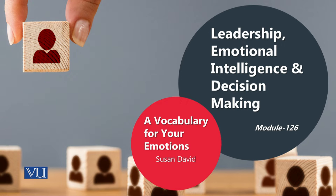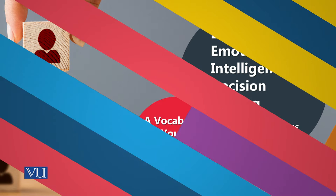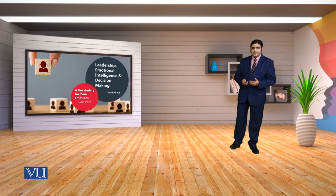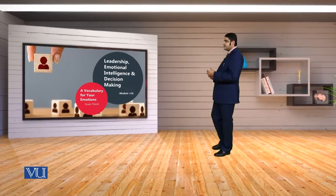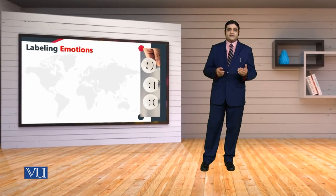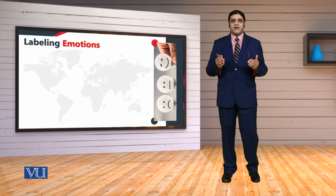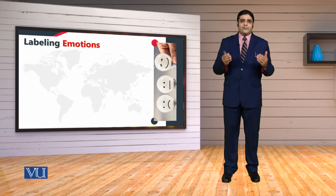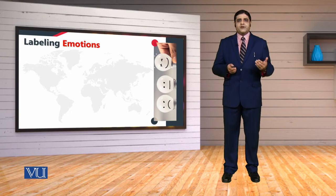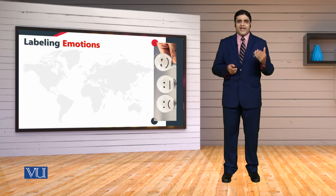When we talk about the vocabulary, basically we are concerned with the details of our emotions, feelings and moods, because it is very difficult to express emotions, feelings and moods in a rightful manner. But when we try to express these things, remember that sometimes we have to label the emotions. By labeling, we mean that we are able to express the right word, the right expression, to tell what exactly we are feeling.